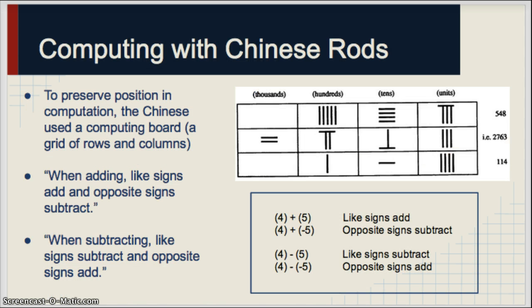When you're computing with Chinese rods, what a lot of people would do is use computing boards that basically were just a grid to keep the positions aligned. And the Chinese had sign rules, though not as specific as Brahmagupta's, which we'll talk about soon. But these two statements right here sum up all of the computation that you would perform on Chinese rods. So when adding, like signs add and opposite signs subtract. And when subtracting, like signs subtract and opposite signs add.